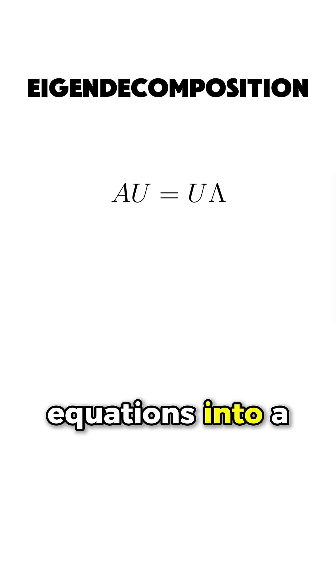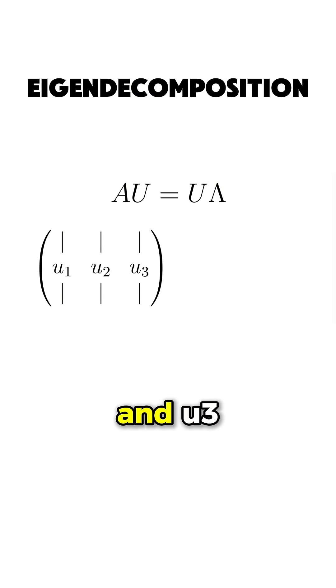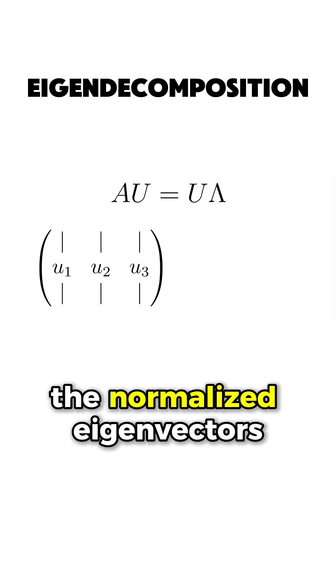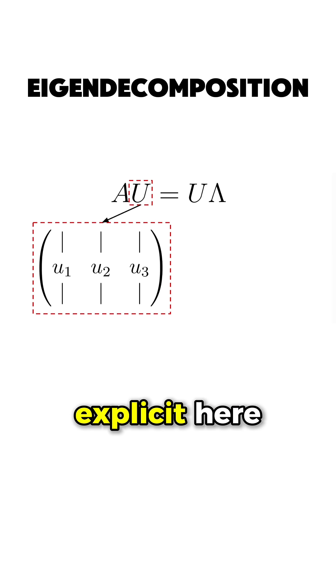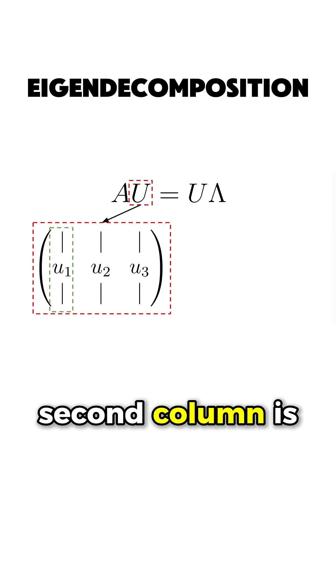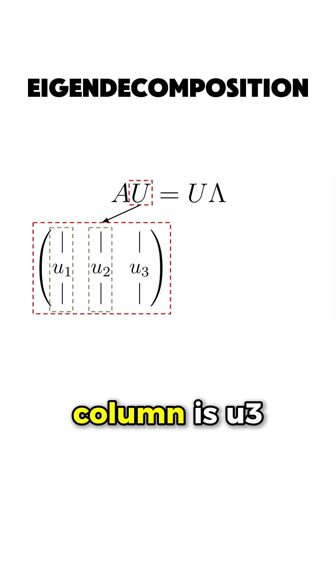We can put these equations into a matrix form. We have the matrix A on the left of the equation, put U1, U2, and U3, which are the normalized eigenvectors into their own matrix. To be more explicit, the first column is U1, the second column is U2, and the third column is U3.